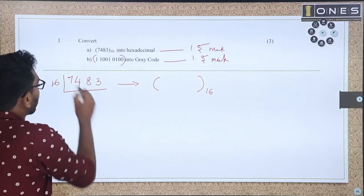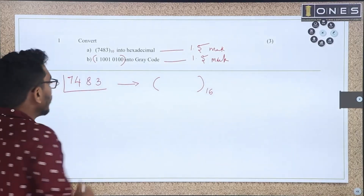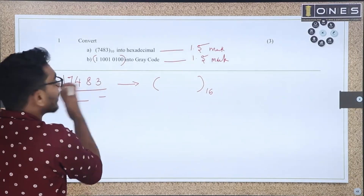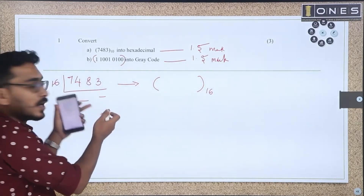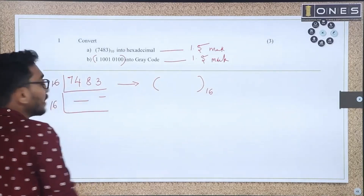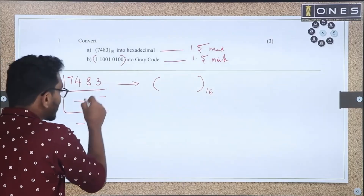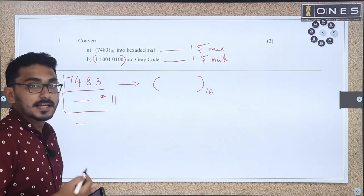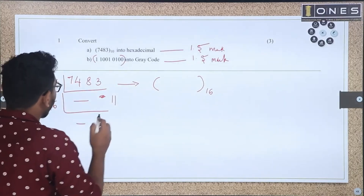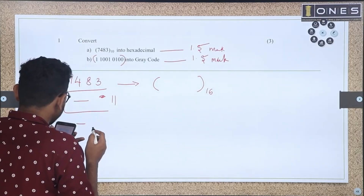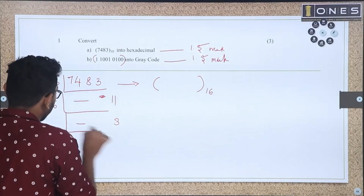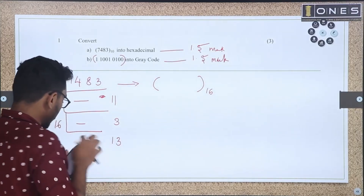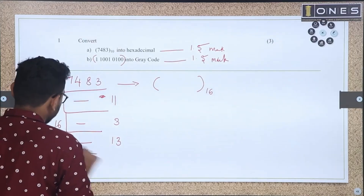We divide the number repeatedly by 16. In the first stage of division, the remainder is 11. In the second division, the remainder is 3. In the third division, the remainder is 13. In the last division, the remainder is 1.